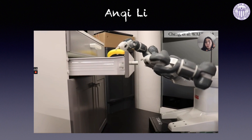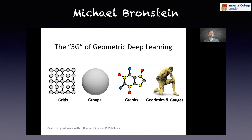Michael Bernstein: This is a very general design. We can apply it to different types of geometric structures, including grids, homogeneous spaces with global transformation groups, graphs, and manifolds. We call this the 5G of geometric deployment.